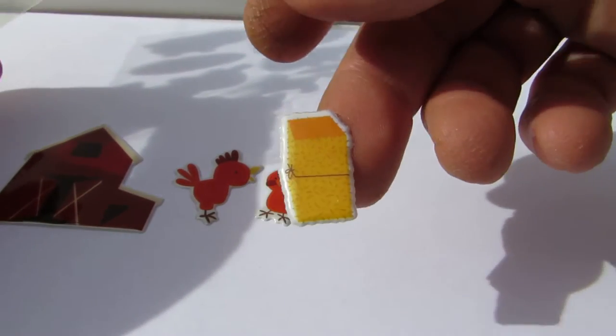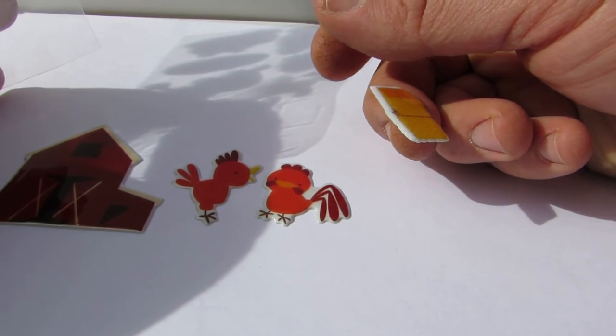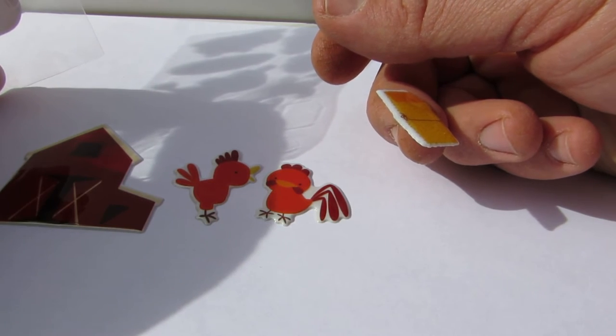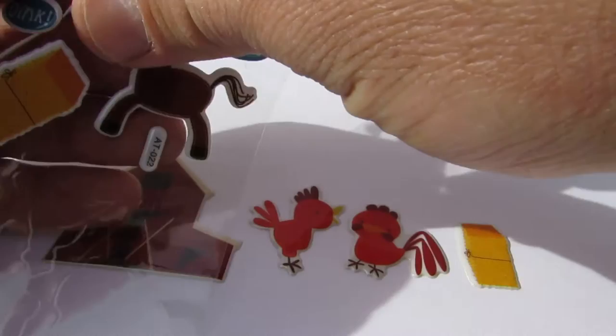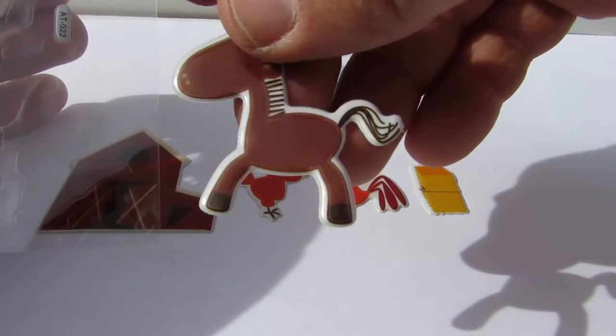We have a pile of, not wheat, how do you call it, straw maybe. We have this beautiful horse.